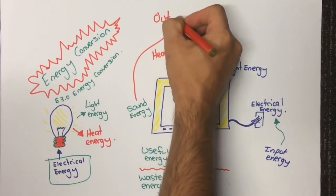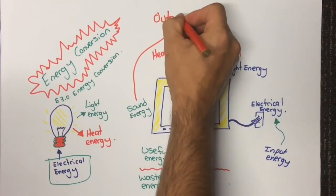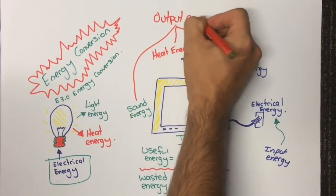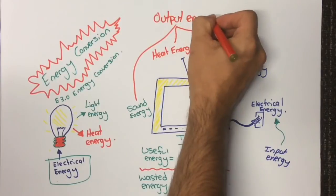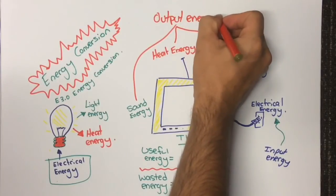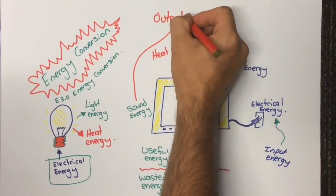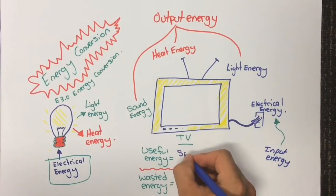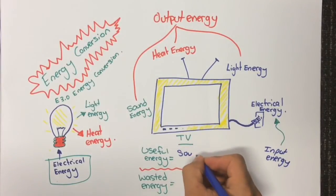The types of energy which are involved in the functioning of devices are known as useful energy. The useful energy for the TV example are the sound and light energy, as these are what the TV is designed to produce.